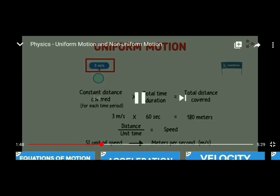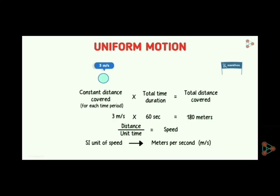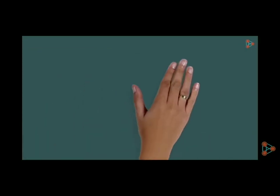Suppose a person is moving with three meters per second, but at some point his speed slows down — maybe due to fatigue — and at another time his energy increases and his speed goes up. That means his speed changes. If the speed changes, then the motion will not be uniform motion. So what kind of motion will it be?